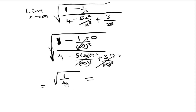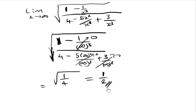The square root of 1 is 1, and the square root of 4 is 2, so our answer is 1 over 2, and this is our final answer.